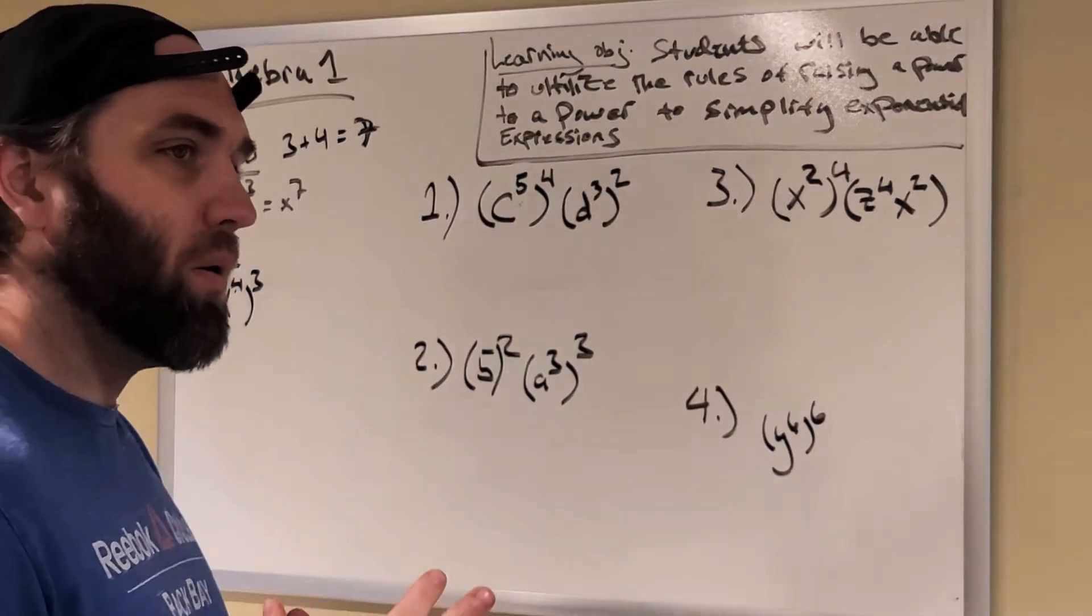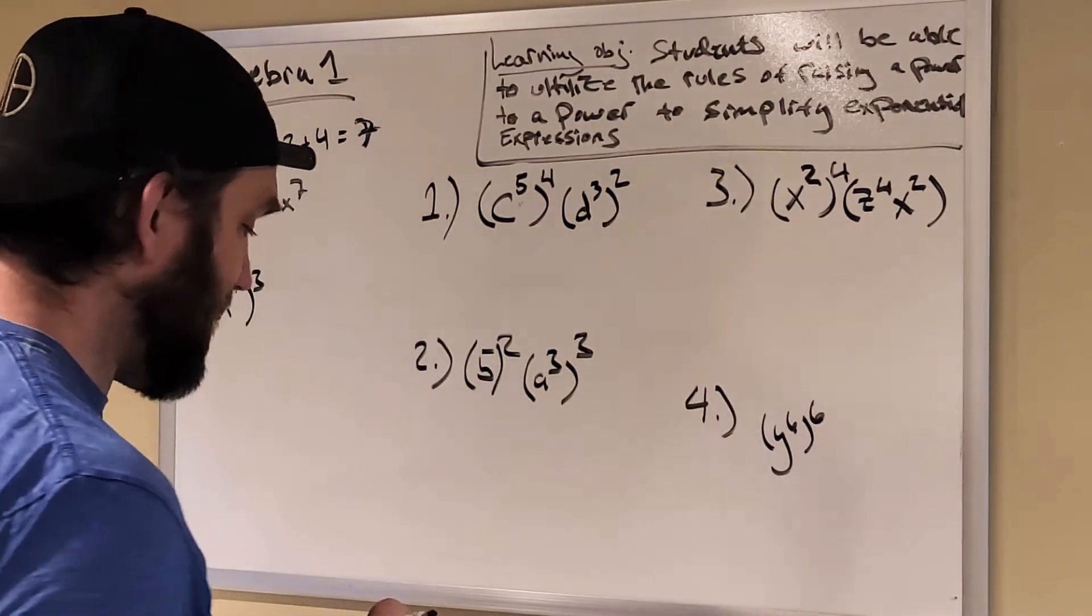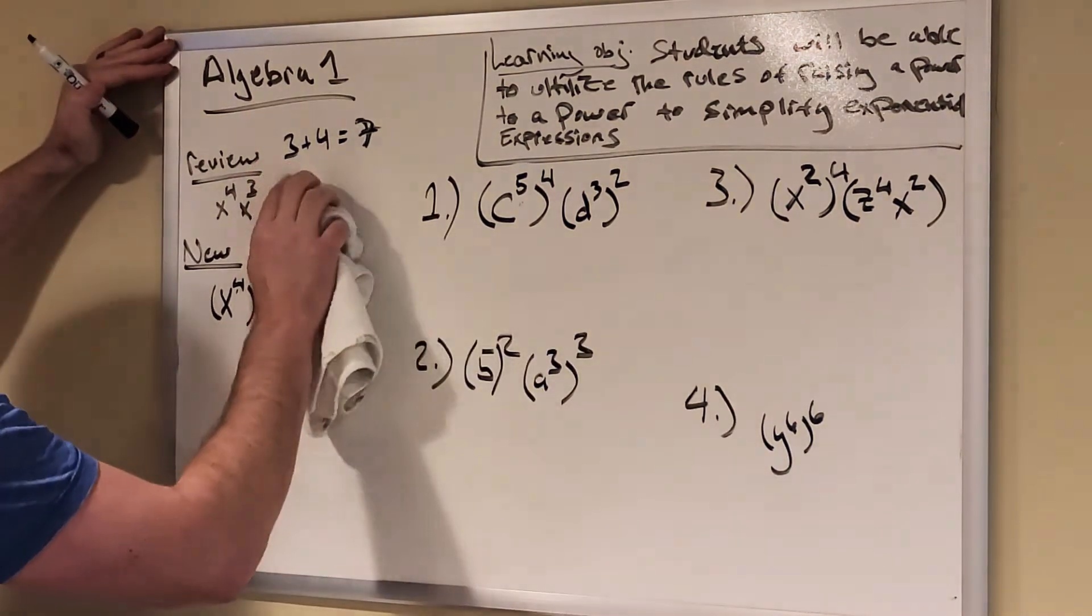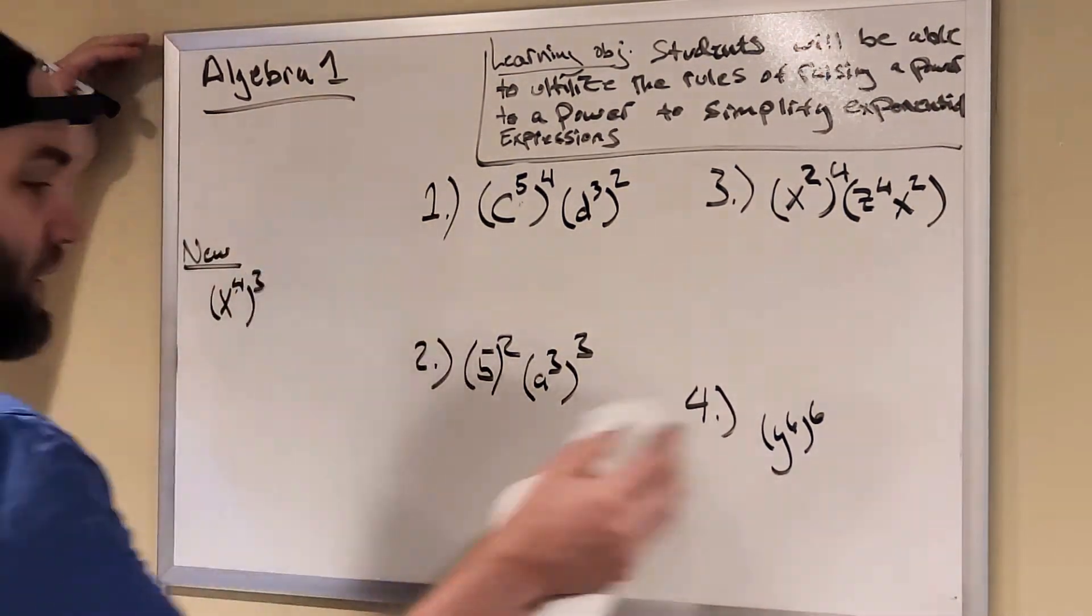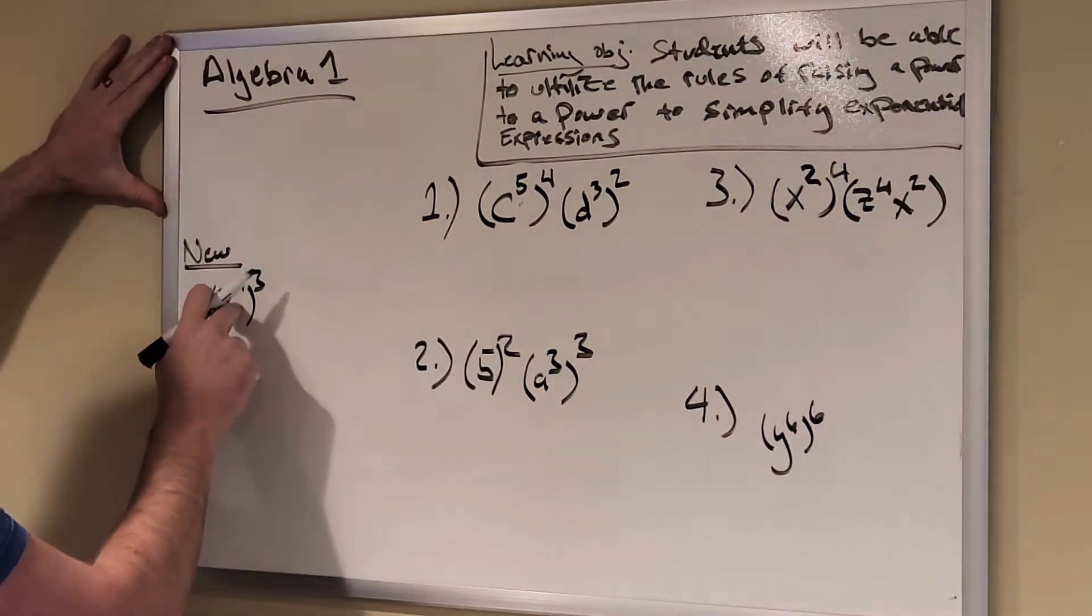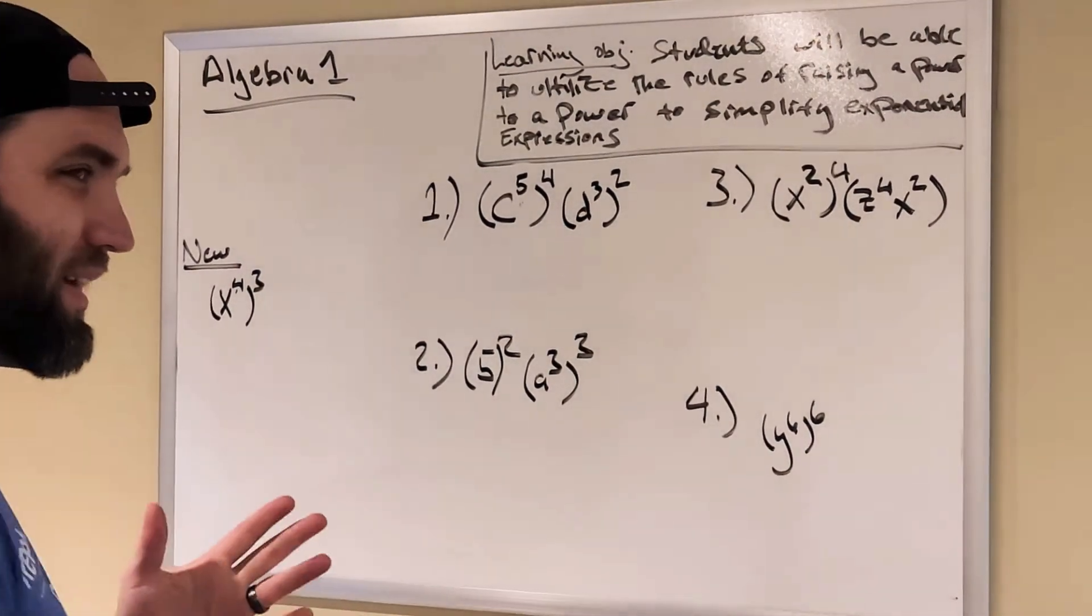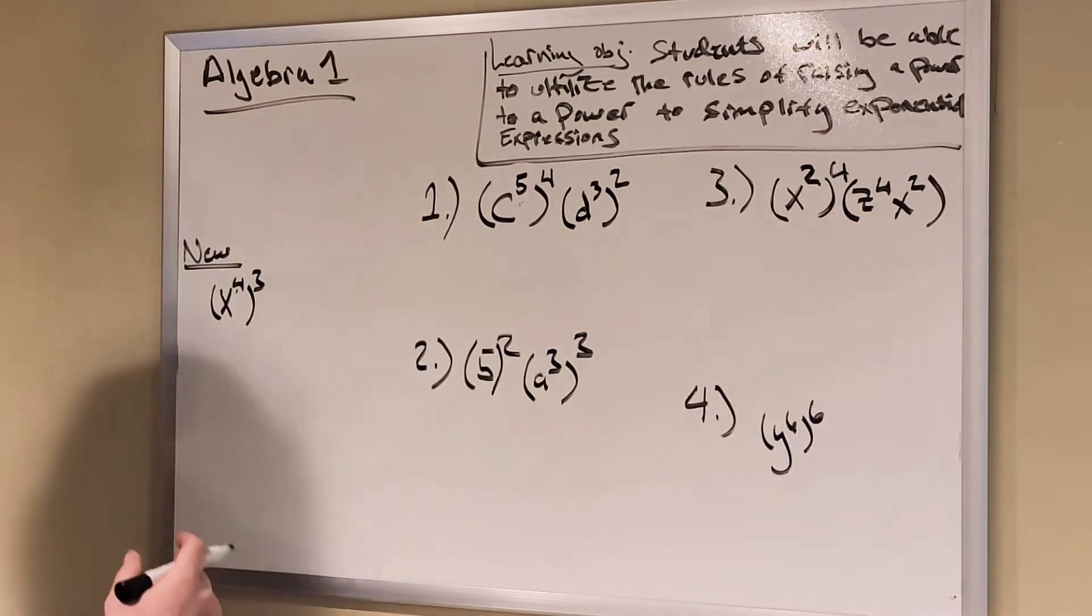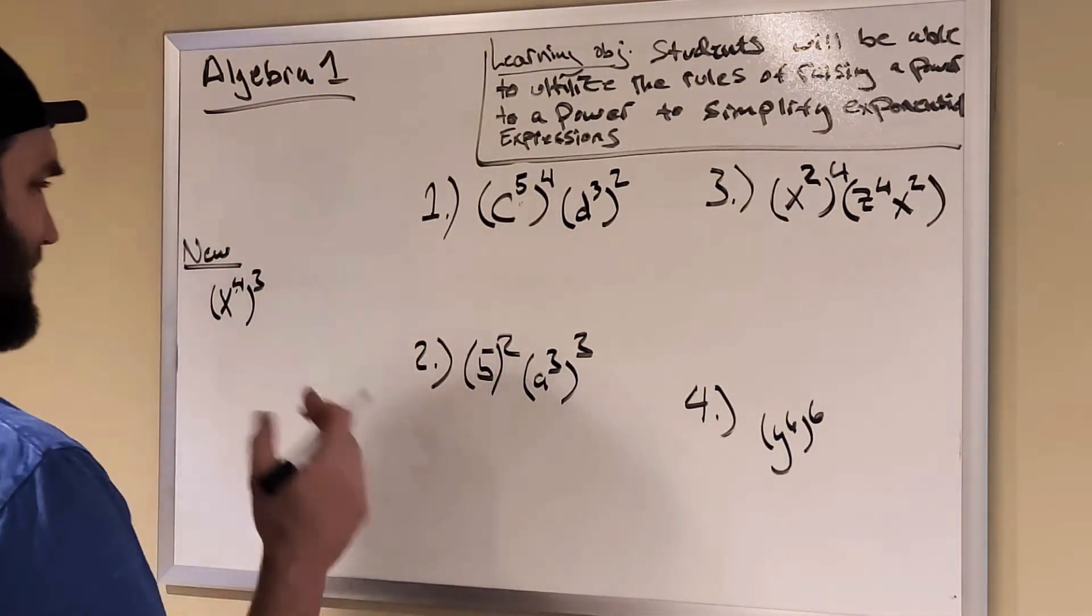Now, instead of multiplying x to the fourth times x to the third, what we're going to work on is we're going to raise x to the fourth to a power. All right, so here I have x to the fourth to the third power. So what does that mean? It's kind of strange because you're raising a power to another power. It seems almost redundant, but let's take a look at what that means.